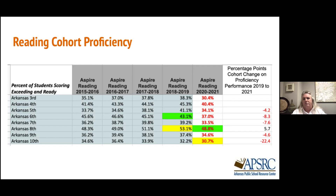I want you to be mindful that the data from 2021 is baseline data for grades three and four, because they don't have any data prior to this year. We don't start the ACT Aspire until grade three.